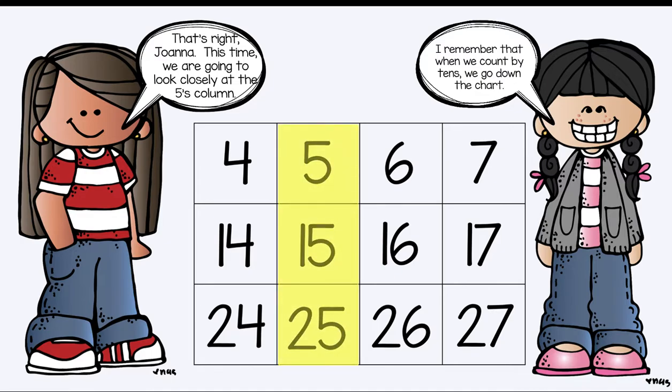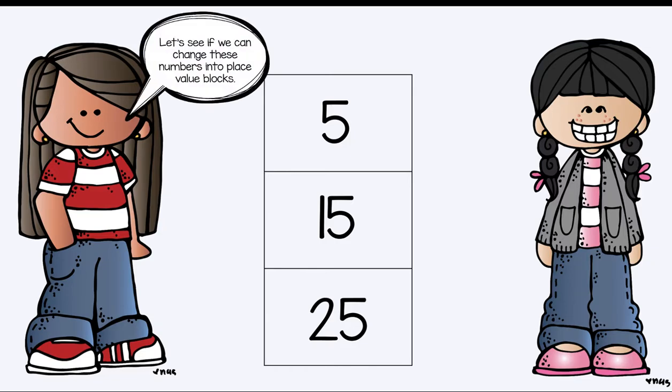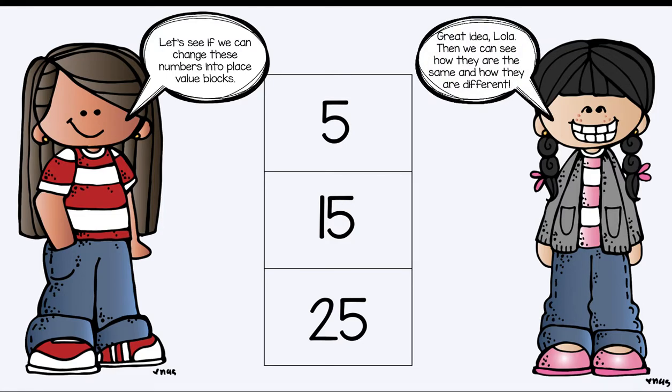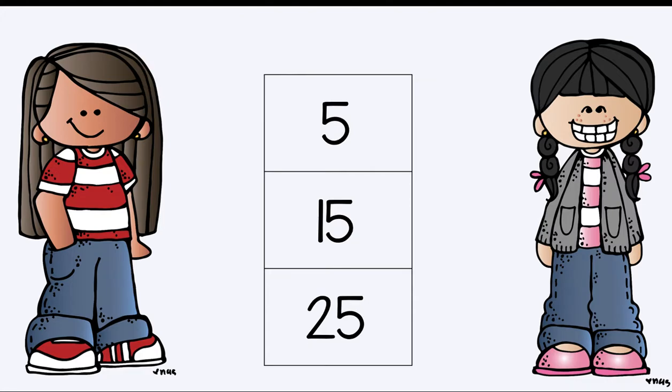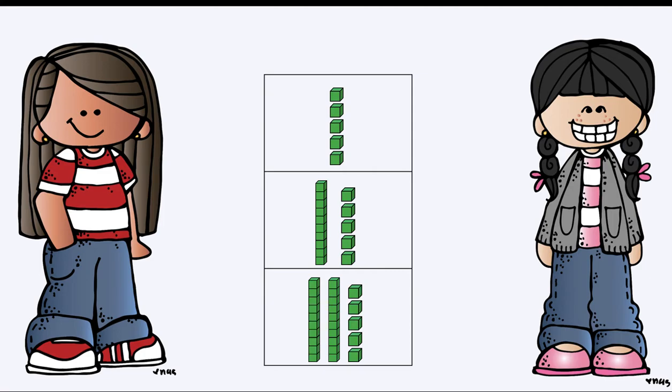Does everybody see the column that we're looking at? Let's see if we can change these numbers into place value blocks. Great idea Lola. Then we can see how they are the same and how they are different. So we're going to take them and place them into place value blocks. This is the number 5. This is the number 15. And this is the number 25.